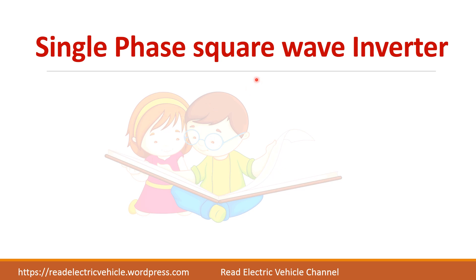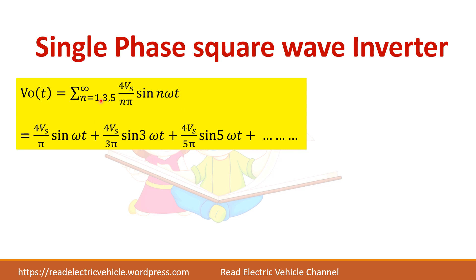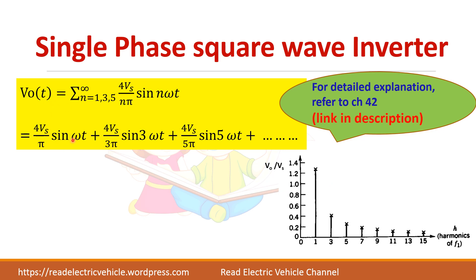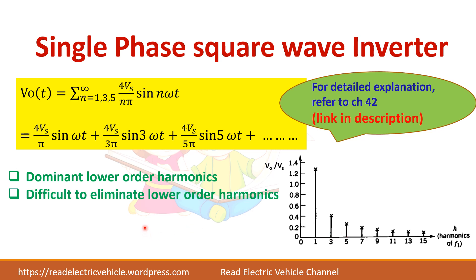Let us see the disadvantages of the single phase square wave inverter. The output voltage expression, already derived, shows the fundamental component when N equals 1, third harmonic at N=3, fifth harmonic at N=5, and so on — all odd harmonics are present. The dominant harmonics are the third and fifth. It is difficult to eliminate lower order harmonics because at lower frequencies the filter size will be very large.